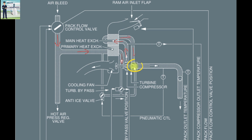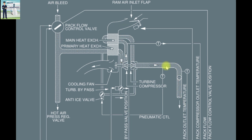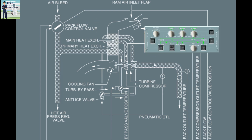This high-pressure air then enters the turbine section of the air cycle machine. At the turbine, the air expands, driving the turbine, and loses a lot of energy — which results in a significant drop in temperature. We therefore get cool air at the outlet. Now let us see what happens in the air conditioning pack when the pilot sets a low temperature.